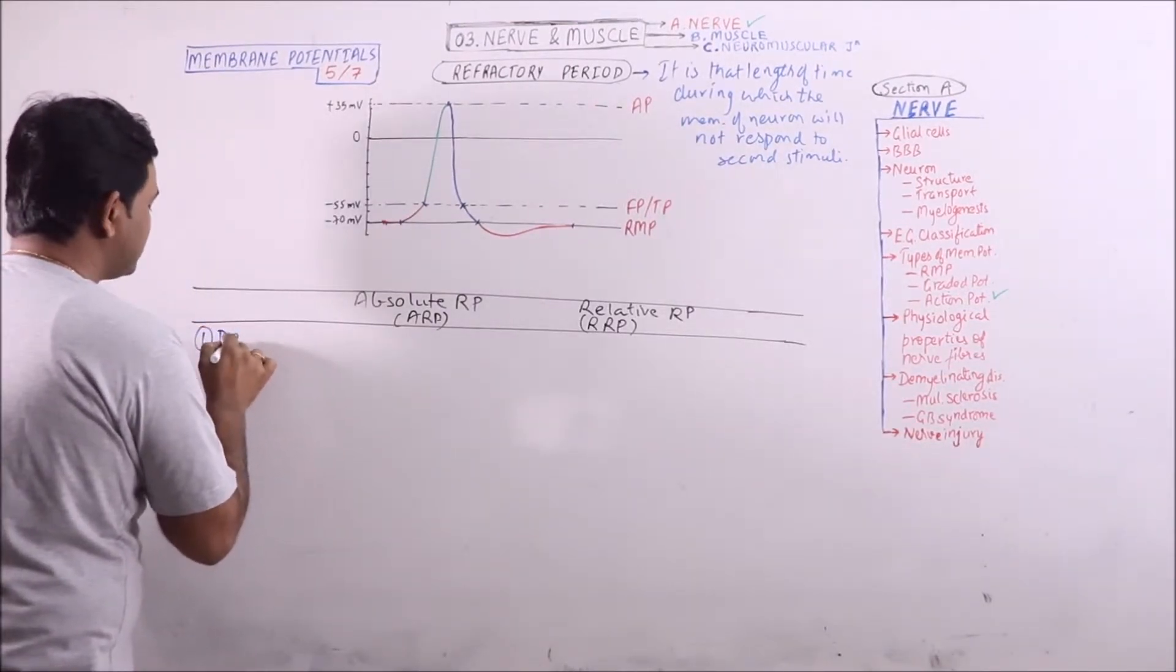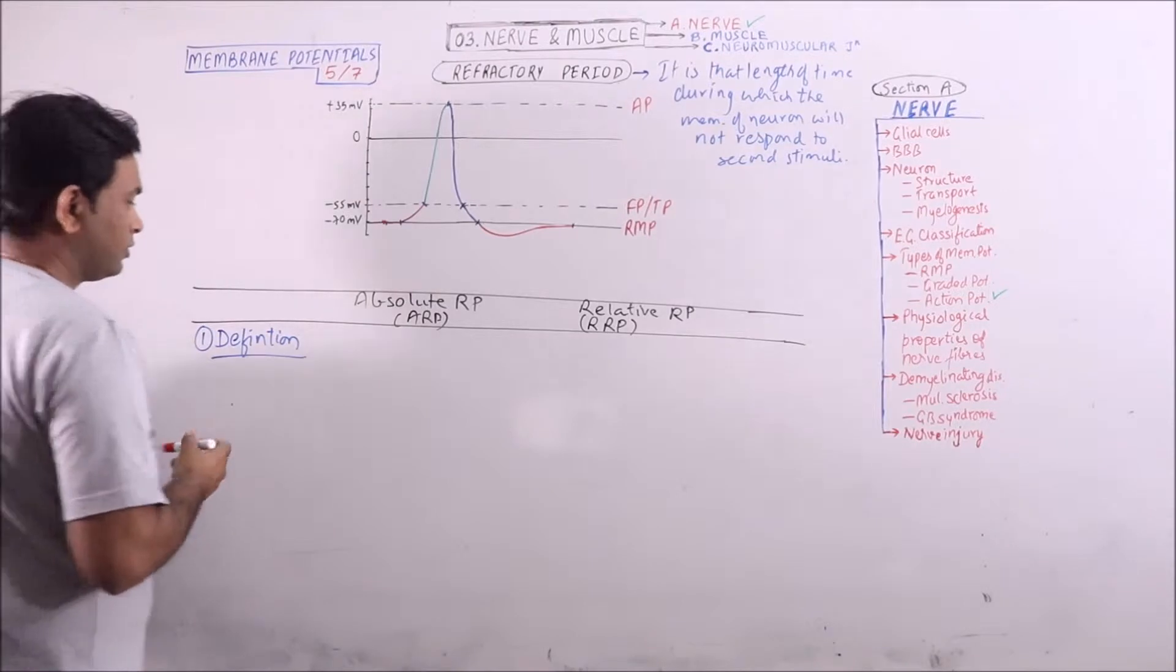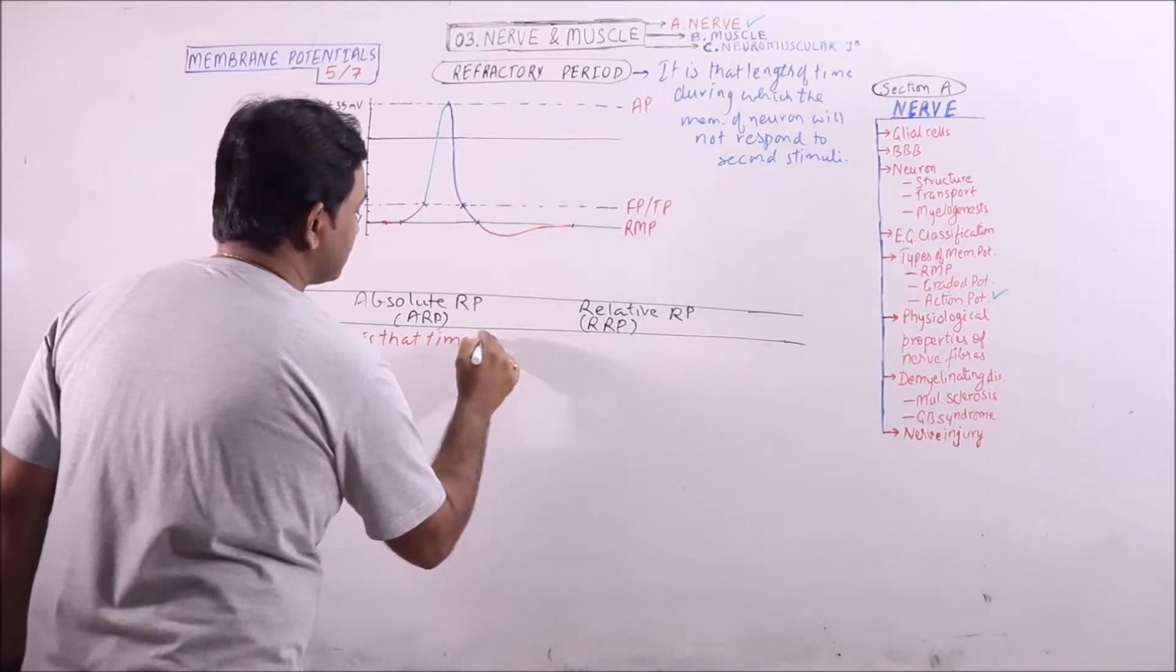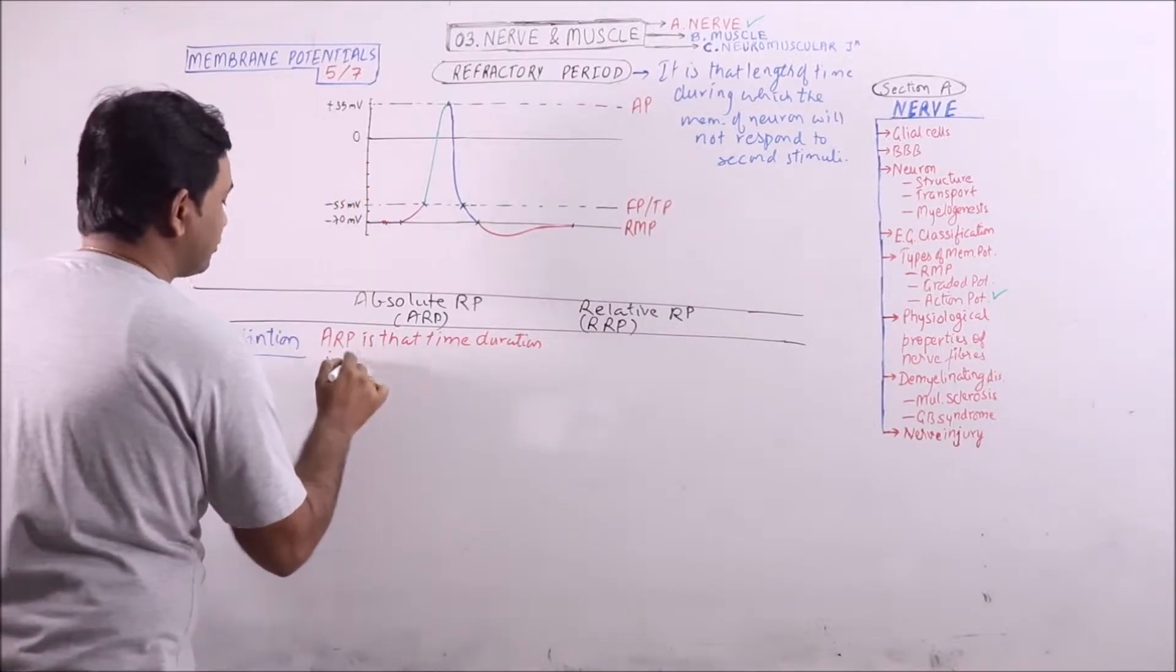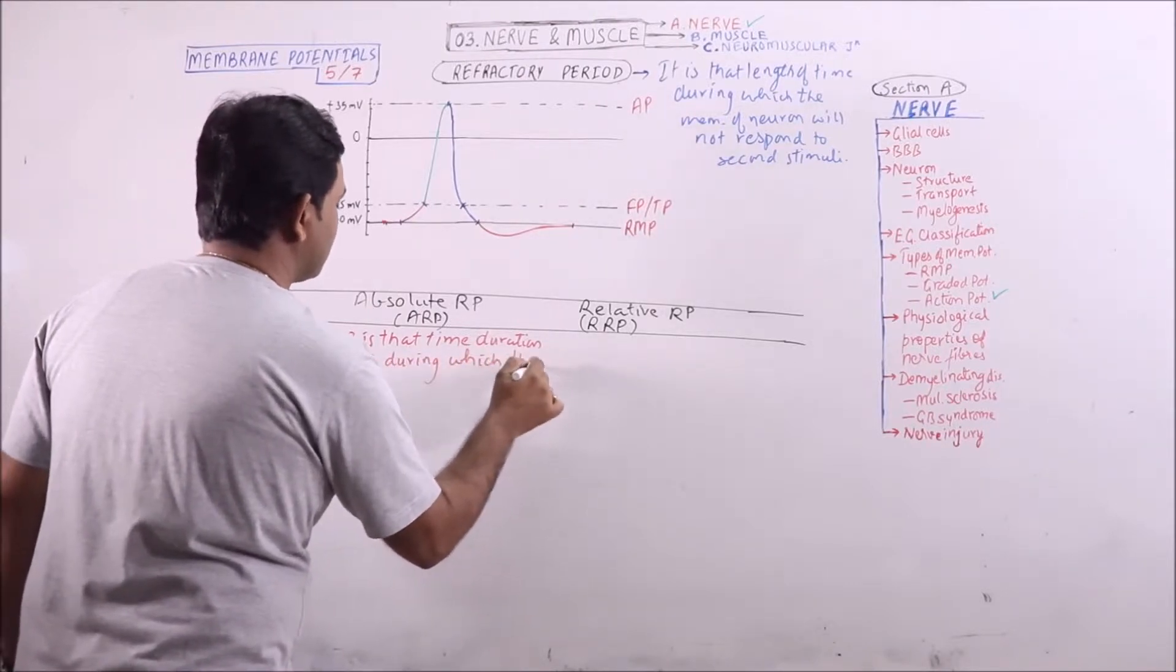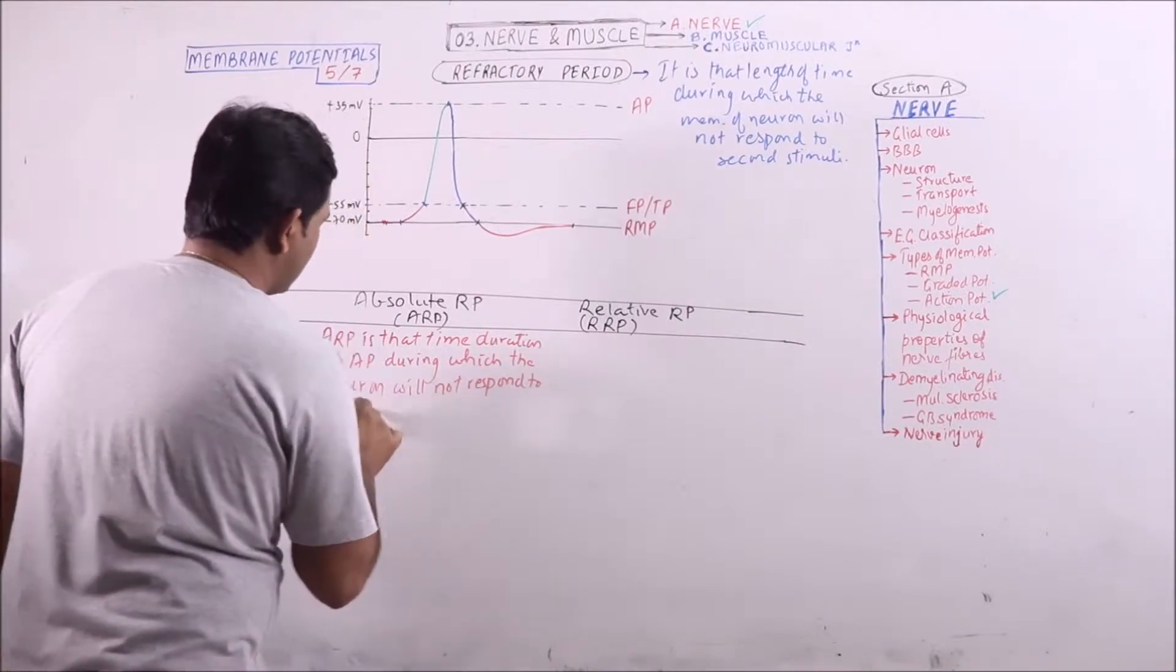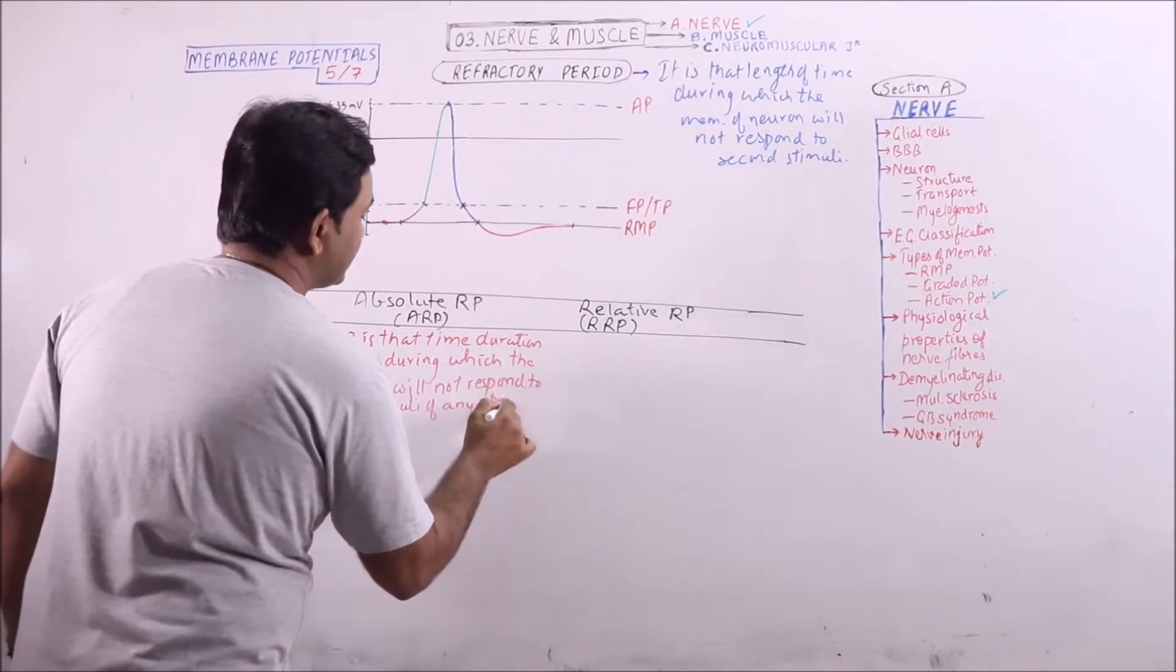What is absolute refractory period? Absolute refractory period is that time duration during an action potential during which the neuron will not respond to stimuli of any strength.